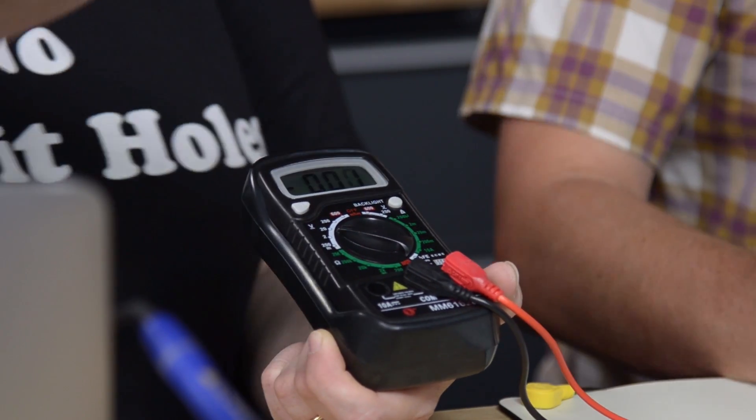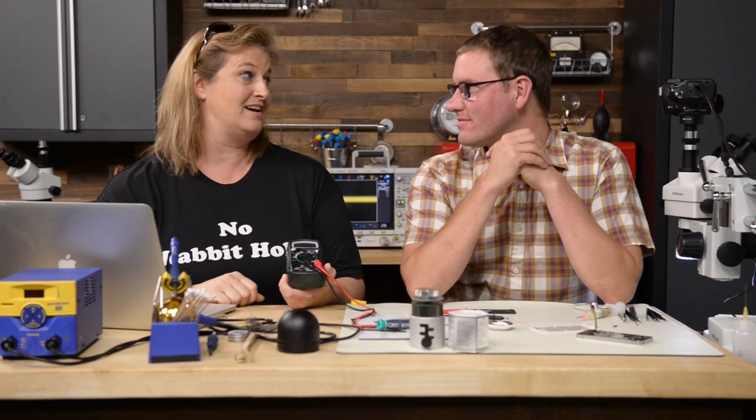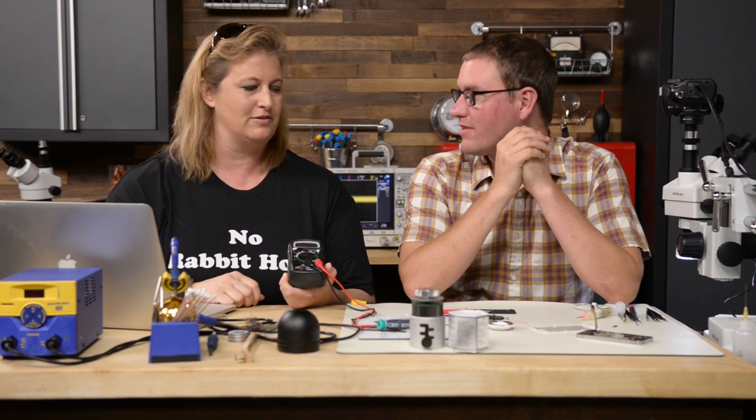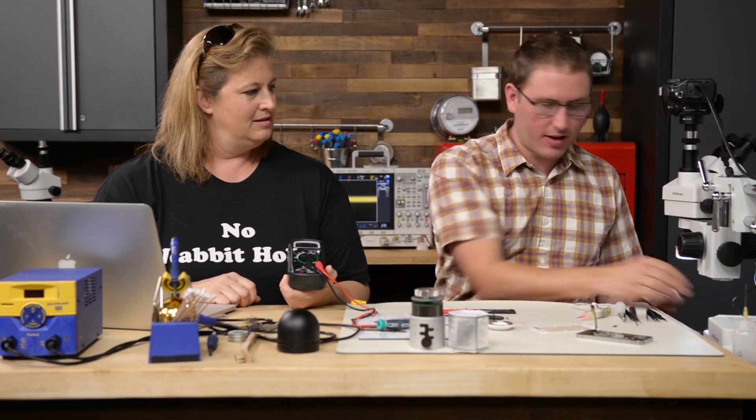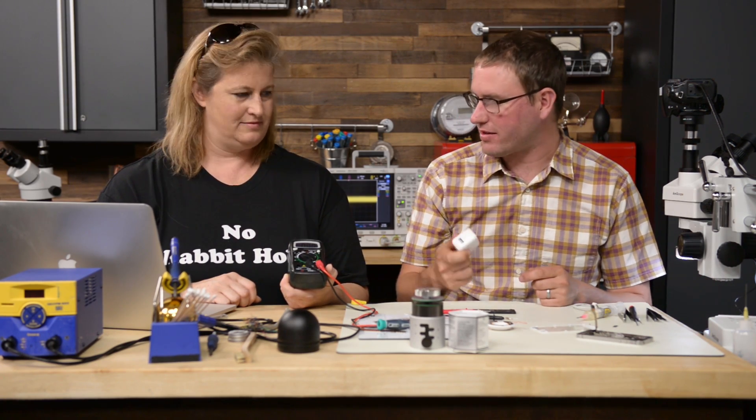Then the V with a straight line is direct current, DC, and that's the kind of current that is battery powered devices. Inside any electronics, your power brick is converting from AC to DC.